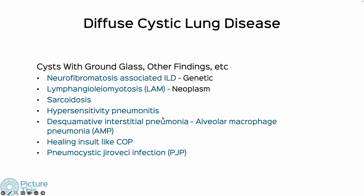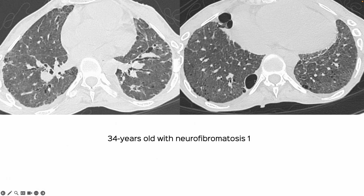Then we have cysts with other findings, typically some form of additional interstitial lung disease. Neurofibromatosis ILD is genetic, and LAM can span all three patterns — cysts with nodules, cysts alone, or cysts with multiple other findings. DIP is now labeled alveolar macrophage pneumonia in the new guidelines. This patient with neurofibromatosis 1 has small and large cysts but also an underlying indeterminate ILD that cannot otherwise be classified — ground glass, reticular opacities, and cysts.